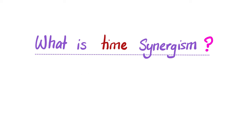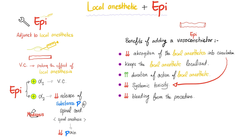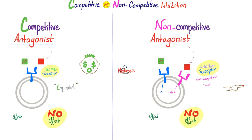What is time synergism? Time synergism was discussed before in this anesthesiology playlist. Why do we add epinephrine to the local anesthetic? Because it constricts the vessel, prolonging the action of the local anesthetic. When you prolong the action of the local anesthetic, this is time synergy.